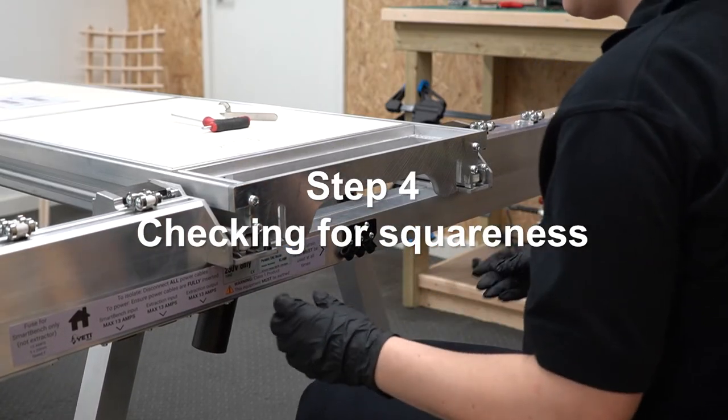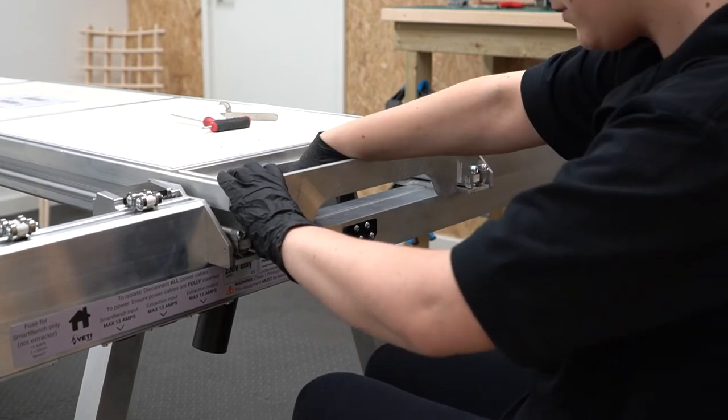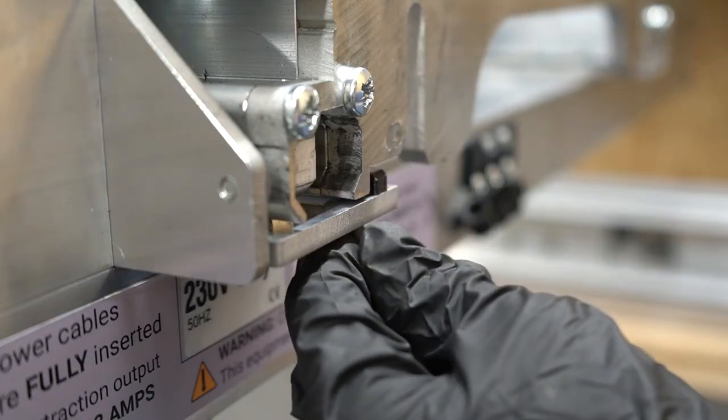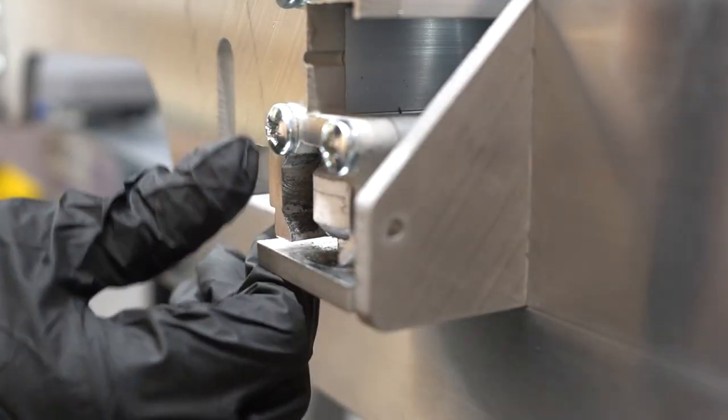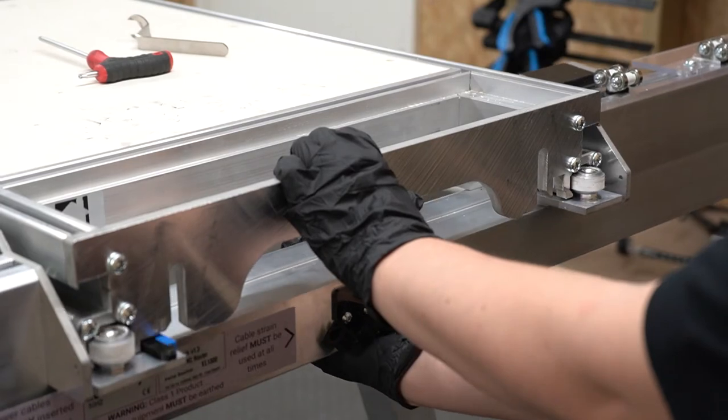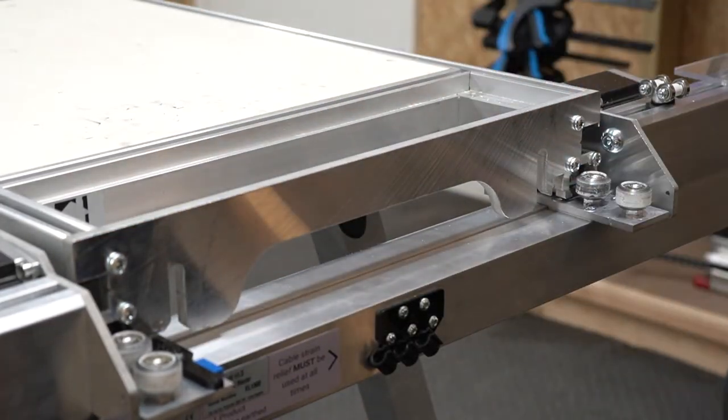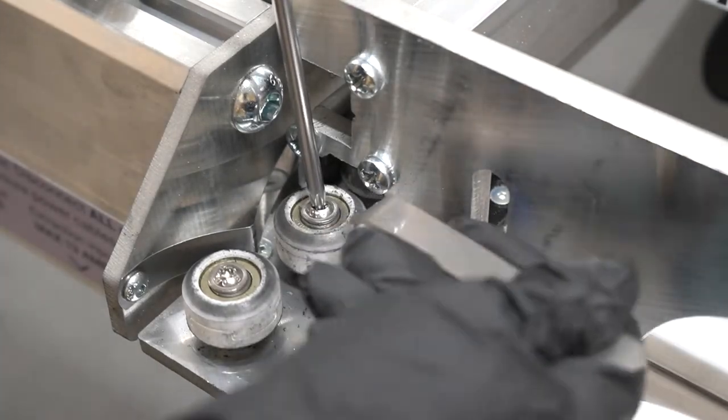Before moving on to wheel set two we need to once again check the squareness of the lower X beam to the Y bench. Now we can see that the right X beam plate is protruding slightly further than the left. This means that we need to reduce pre-load on the right wheel and increase pre-load on the left wheel. Make minor adjustments till both plates sit flush with the Y bench.